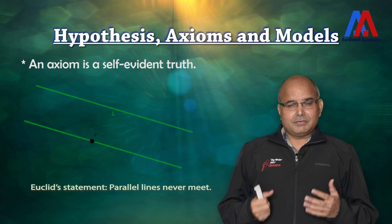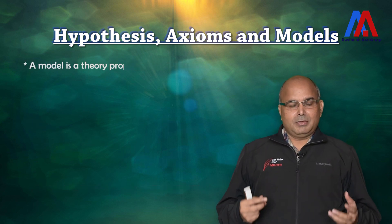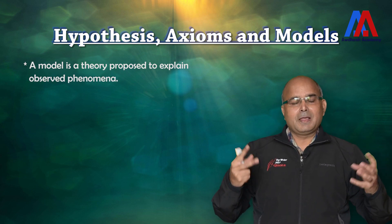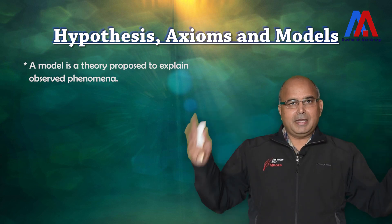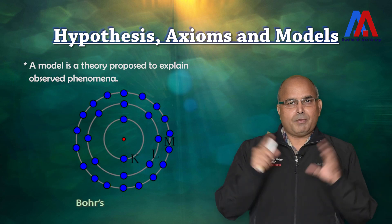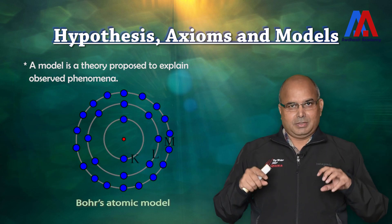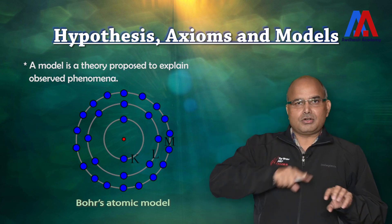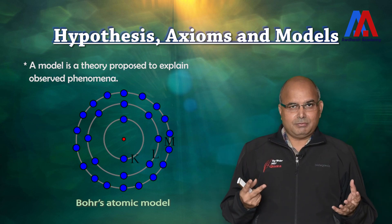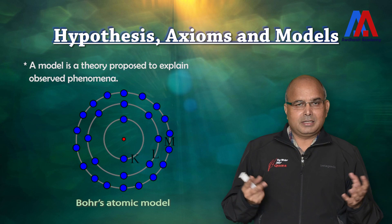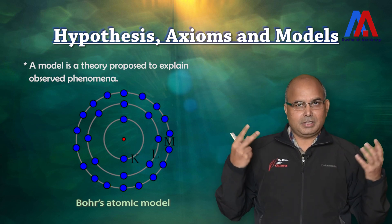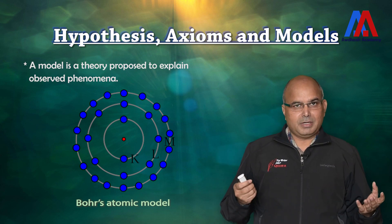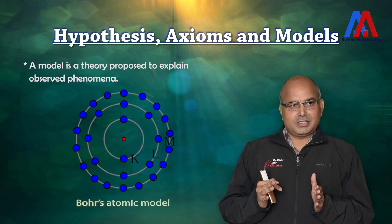The third important term is model. When you observe something, you try to convert it into a physically understandable representation so that you can explain the observation. For example, Bohr gave an atomic model resembling a solar system, with a positively charged nucleus at the center and electrons orbiting around it. This hypothetical model was able to explain the different phenomena and behavior of atoms and materials, and so it was accepted.